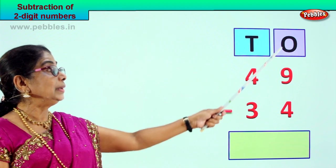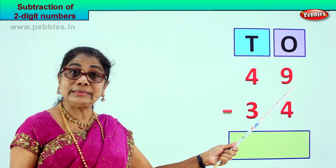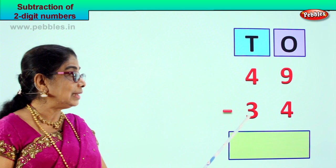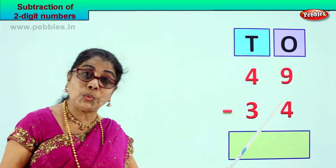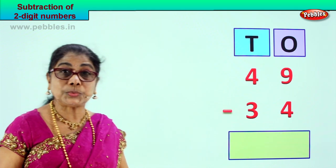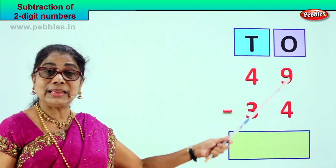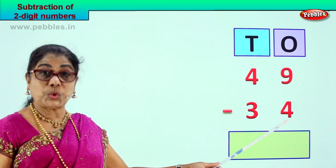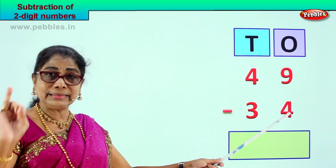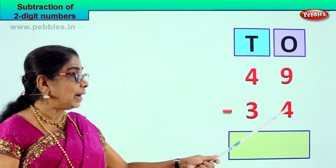We have placed the numbers as ones and tens in order. Forty-nine minus thirty-four — four tens, nine ones, minus three tens, four ones. Forty-nine take away thirty-four. Let's go. Take the ones place first — you have nine ones minus four ones.